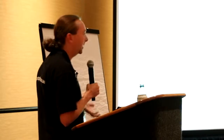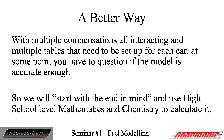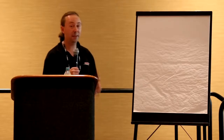What you end up with is maybe eight different correction tables which all interact with each other. If the mixture is wrong under some condition, you don't always know which map needs to be adjusted. At some point you have to say, maybe the model isn't actually a very good model. Maybe the initial assumption of RPM on one axis, load on the other, and milliseconds in the table — maybe that's not accurate enough to represent what actually goes on in the engine. So instead we're going to build another model now using high school maths and chemistry.